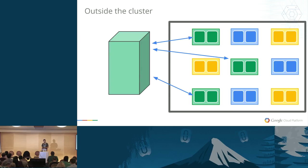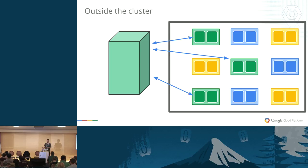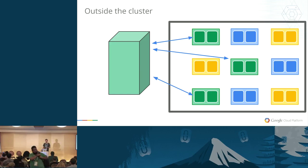The first pattern — running outside the cluster — looks something like this: your containers running inside the cluster, talking to a service that's outside and completely managed outside.